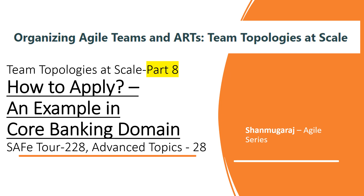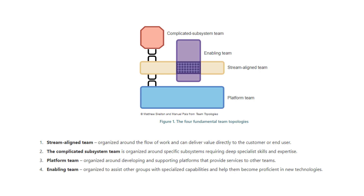Having said that, let us get into today's topic. We are continuing our topic around organizing agile teams and ARTs — team topologies at scale. Today we are going to talk about one significant example on placing your team topologies at scale. We are going to see an example in the global banking domain.